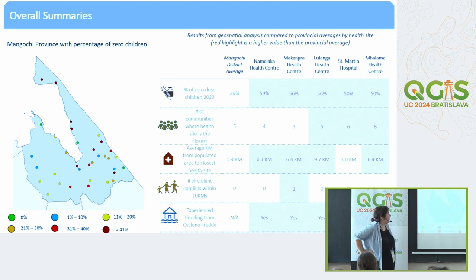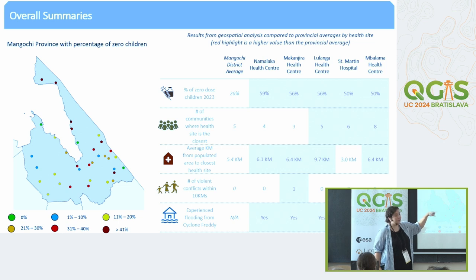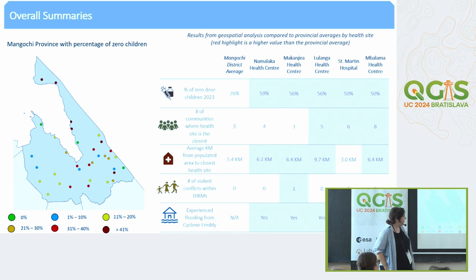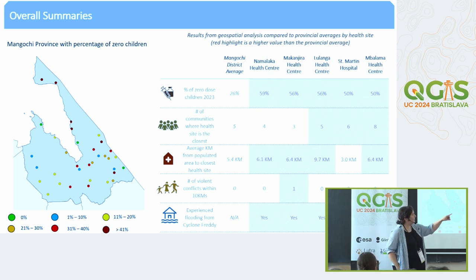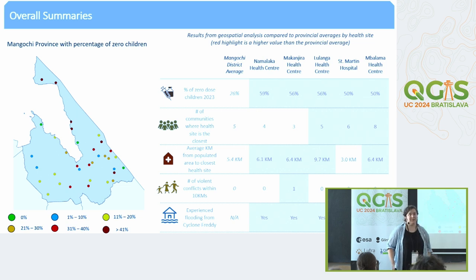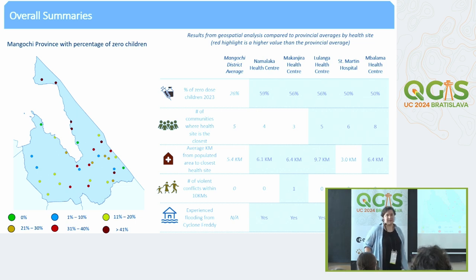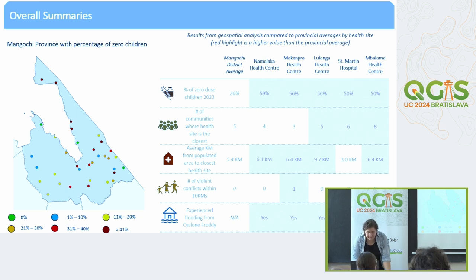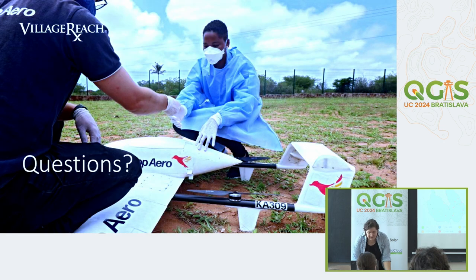What this entire process allowed us to do was create profiles for each of the provinces, to better understand, for example, if we wanted to target interventions in Luganga Health Center, what were the contributing factors leading to zero-dose children there? This is what we were able to produce and present to the ministries of health.